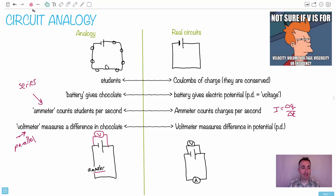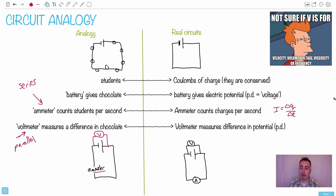Continuing with this circuits analogy, I'm going to review again. Remember what a voltmeter does? A voltmeter measures the potential — in the analogy it was a difference in chocolate, but in real life it measures a difference in electric potential, so we call that one volt. And the ammeter is connected directly in series, whereas the voltmeter is connected in parallel.